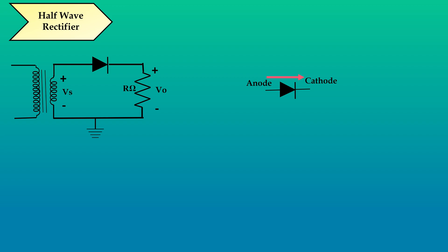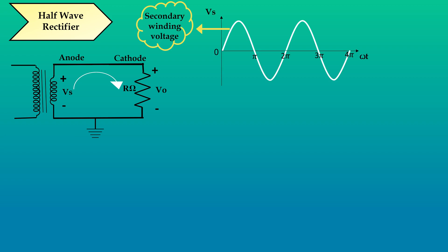During the positive half cycle, the current flows in this direction. Since the current direction is from anode to cathode, the diode acts as short circuit. Now our load is connected parallel to the secondary winding of the transformer. Therefore, the load voltage will be equal to the secondary winding voltage.